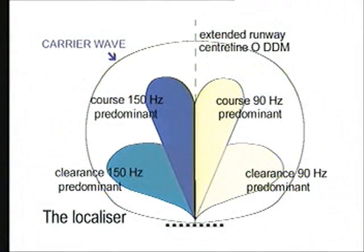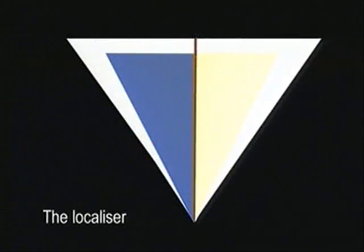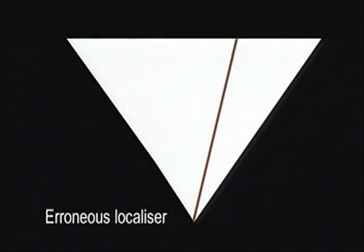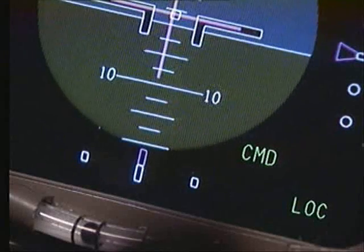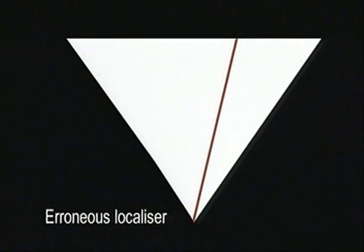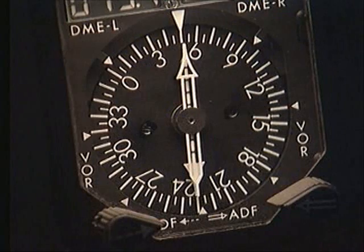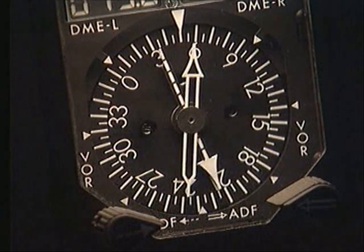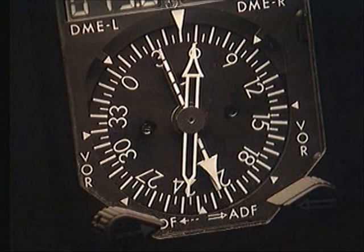The localiser signal is formed electronically in a similar way to the glide slope signal. The erroneous localiser presents the same problem but in the lateral path. Again, you would have an on-centre indication, no flags, and a normal ident, but the aircraft would not be following the correct path because it would not be getting any lateral deviation information. The best strategy for this fault is to cross-check the ADF or VOR pointers — they will show any tracking discrepancy if they are selected to the outer marker or a NAVAID selected at the field.